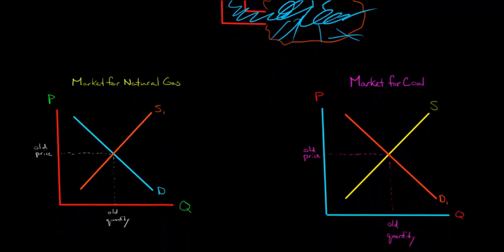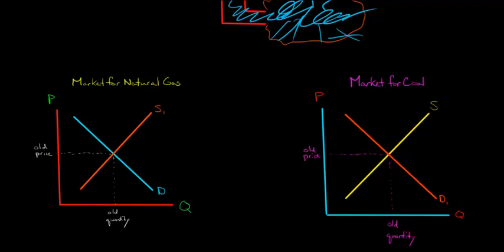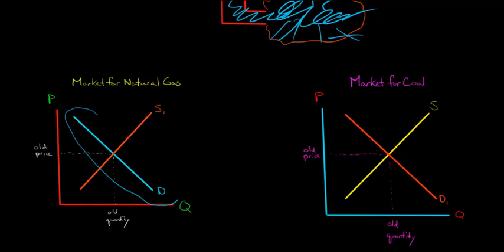Because we have this new technology, if we think about the market for natural gas, we're actually going to have a shift in our supply curve. I've got our supply curve here, and then we've got our downward-sloping demand curve. Because we have a new technology that allows for more production of natural gas, our supply curve is going to shift to the right. I'm going to label that S2 — that's our new supply curve.